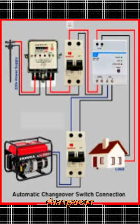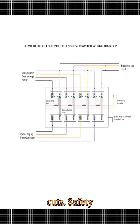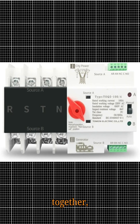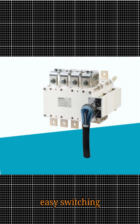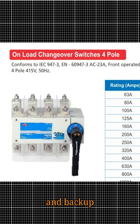Why do we use a changeover switch? Power backup ensures continuous electricity during power cuts. Safety prevents two power sources from running together, avoiding short circuits or backfeeding. Convenience allows easy switching between sources without rewiring. Load management helps distribute or isolate loads between main and backup power.